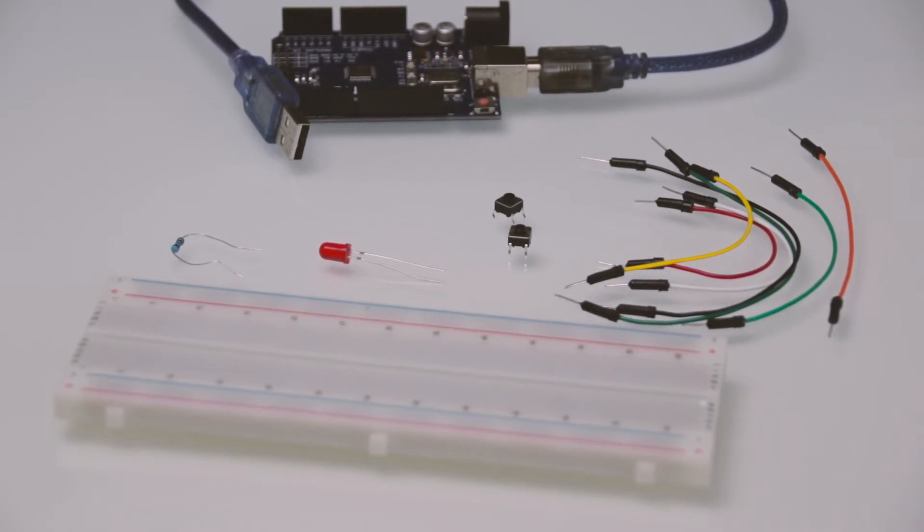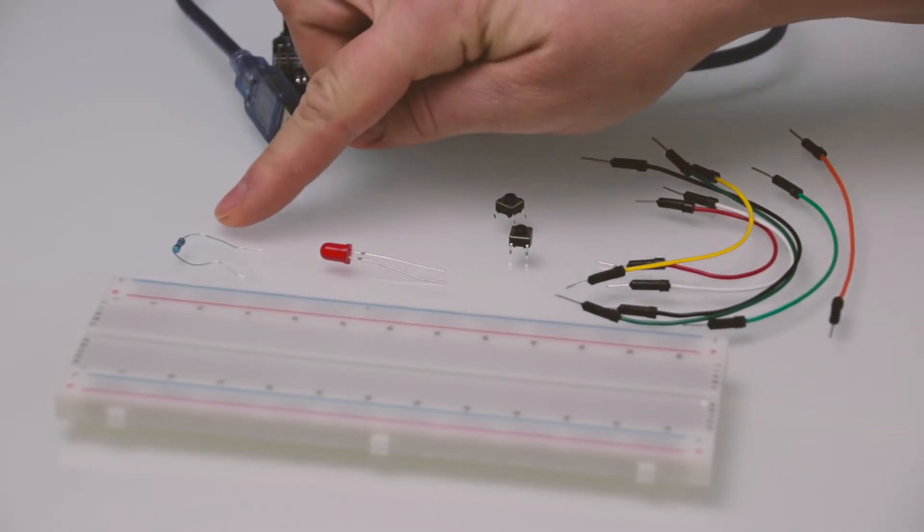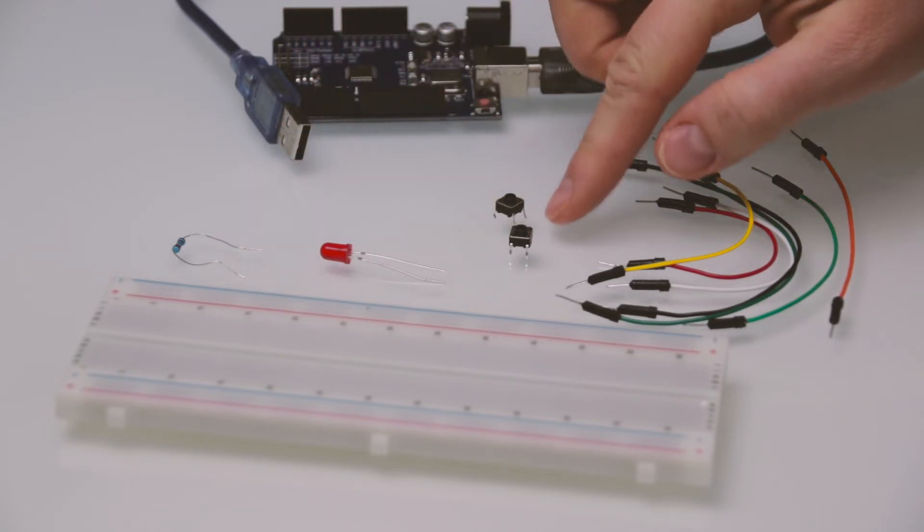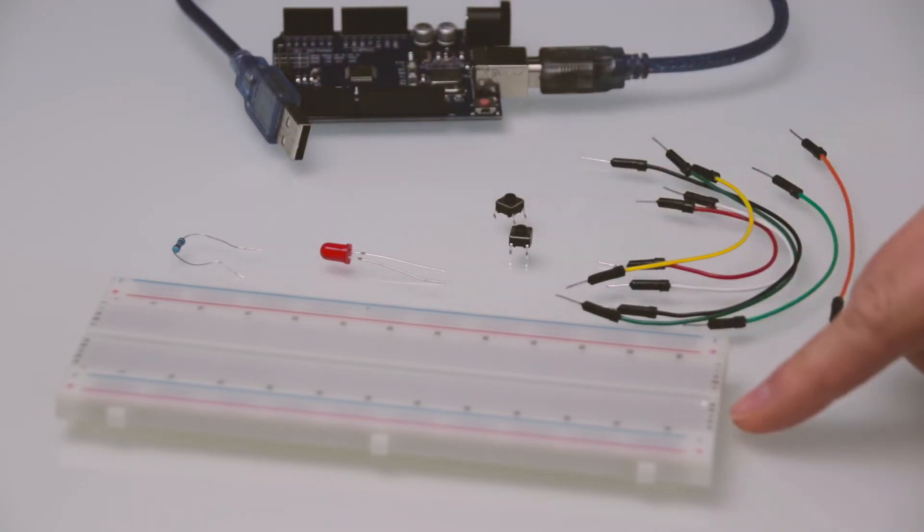We will need the following parts: 5 millimeter red LED, 220 ohm resistor, two push buttons, breadboard, UNO R3, and seven jumper wires.